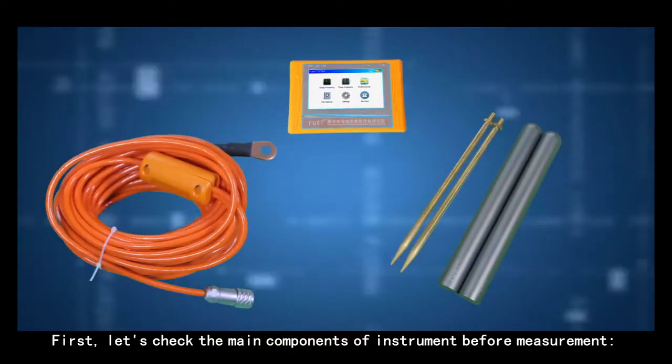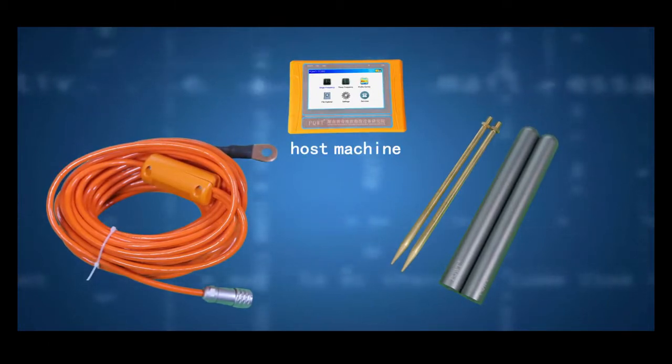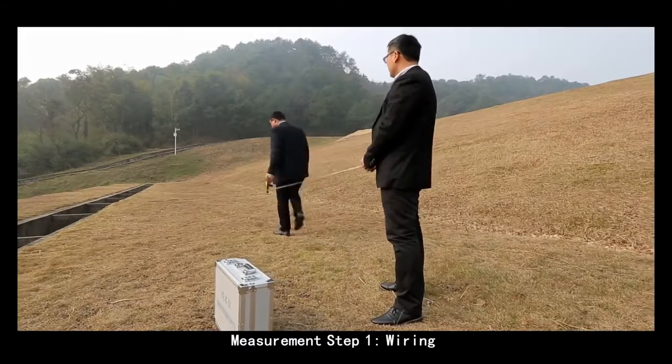First, let's check the main components of instrument before measurement: host machine, connection cable, and alloy electrode.